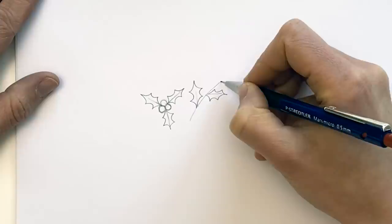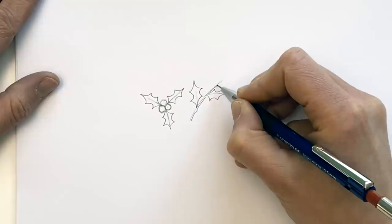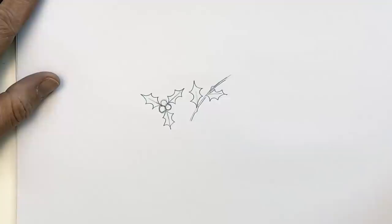And then for the stem, I would just give it a bit of width. So double that up to make it into a double line.